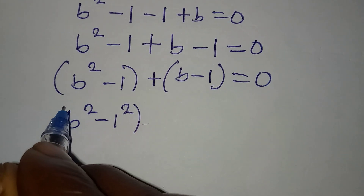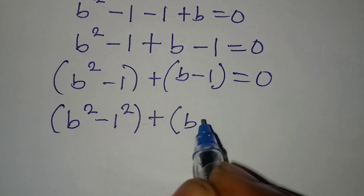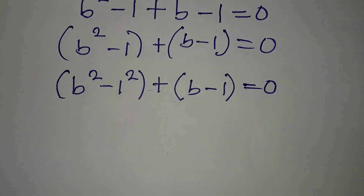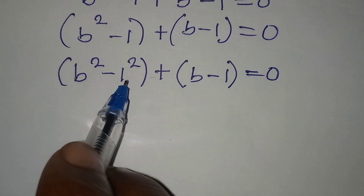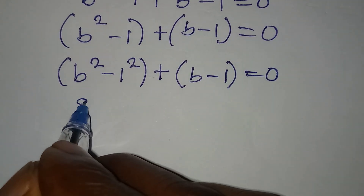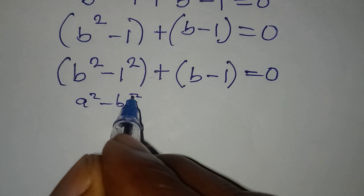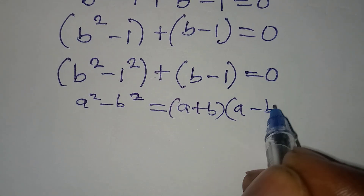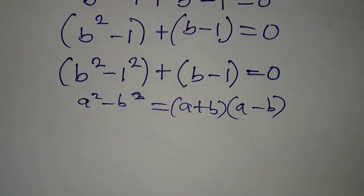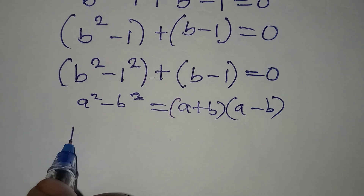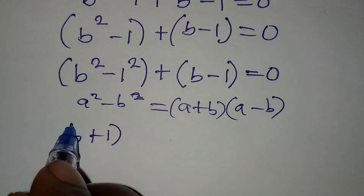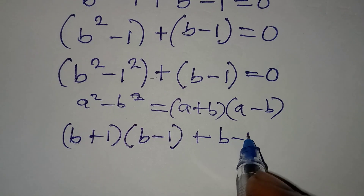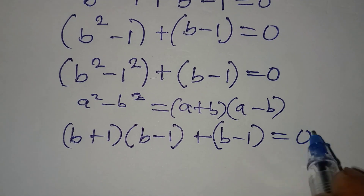Now b squared minus 1 is the same as b squared minus 1 squared, plus b minus 1, all equal to 0. We apply the difference of two squares: a squared minus b squared equals (a + b)(a − b). Applying that here gives us (b + 1)(b − 1), plus b minus 1, equal to 0.